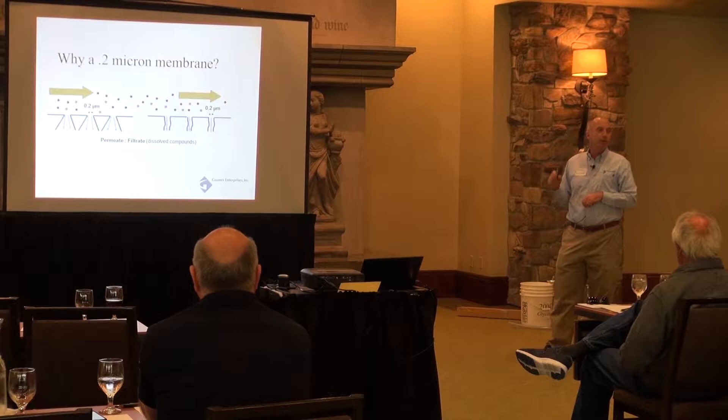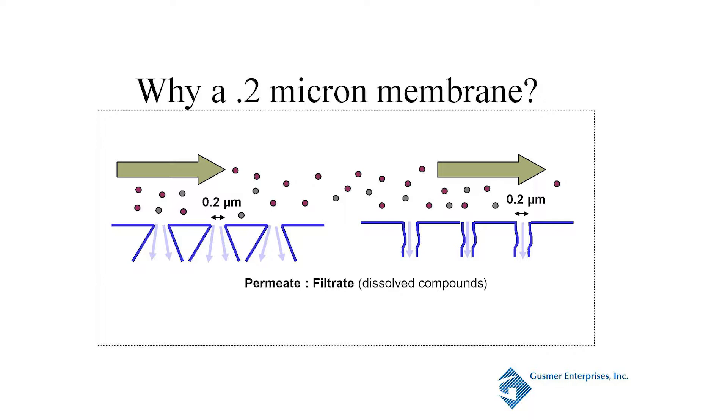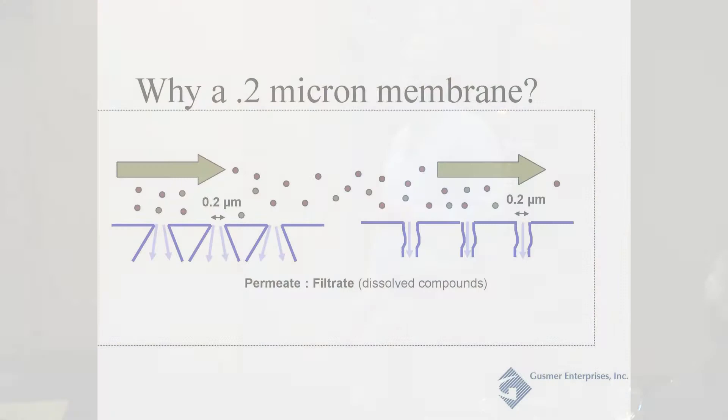Bucher has an asymmetric membrane, meaning the pore size — the pore distribution or hole size — actually gets more open as you go through the filter media. Whereas in a symmetric membrane, the pore structure is pretty comparable throughout the whole course. The reason we have an asymmetric is that we have a very efficient backflush, which is really critical to the Bucher system. There are some advantages that Nate touched upon for bubble point testing why symmetric could be used, but we're talking about two different animals with a cartridge filter versus crossflow.